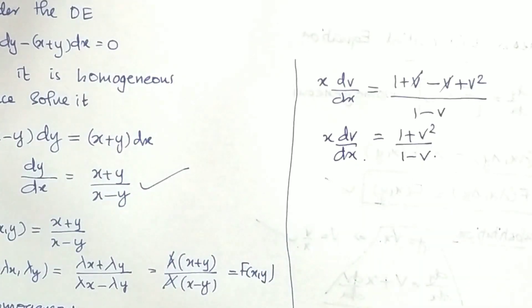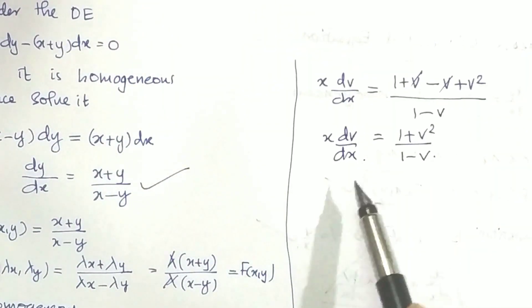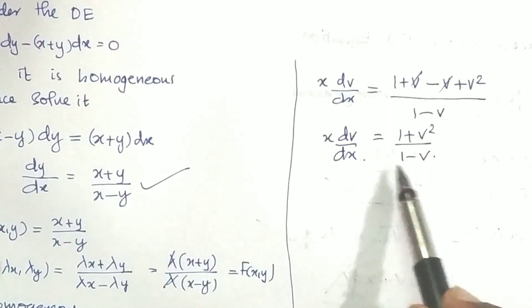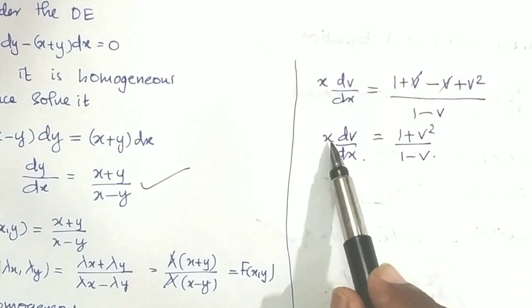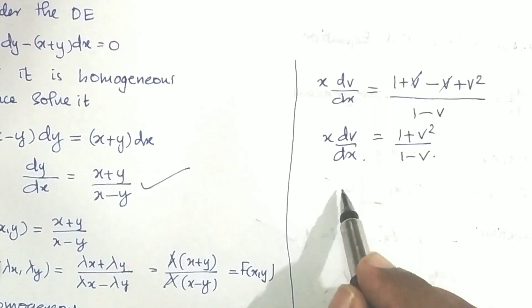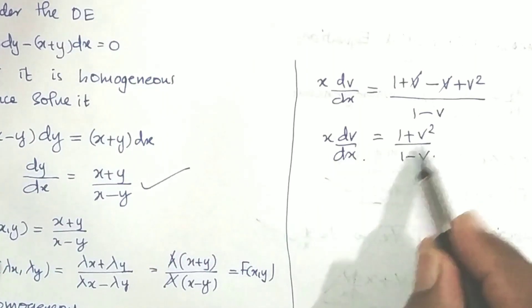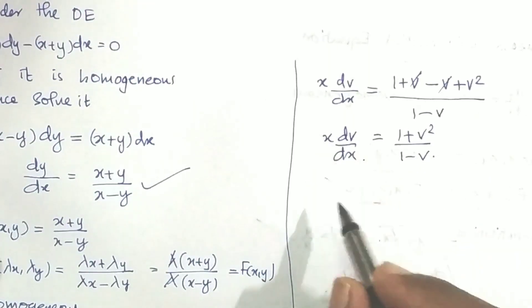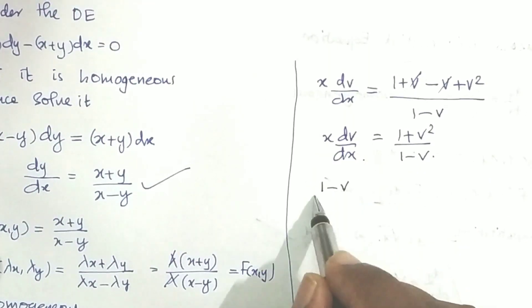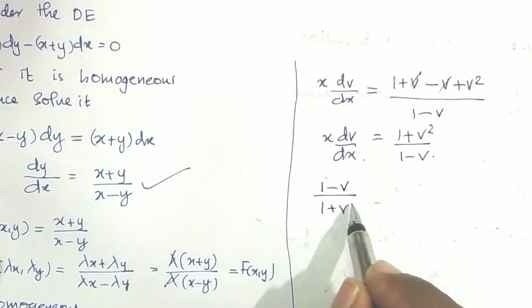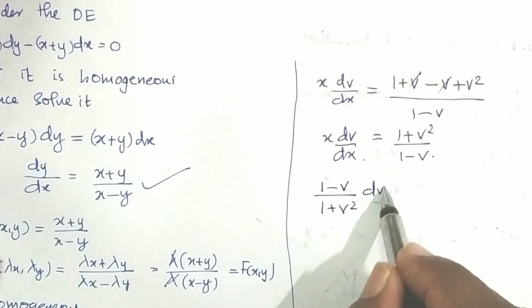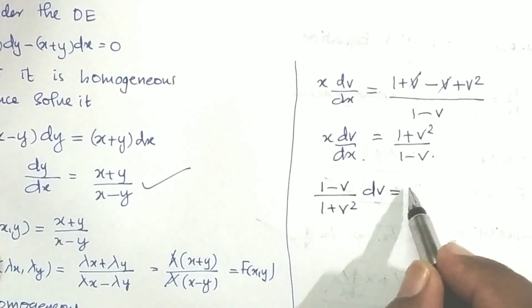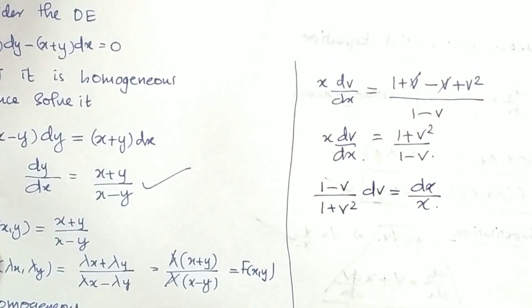This is now in variable separable form. Separating variables: (1 − v) / (1 + v²) dv = dx / x.